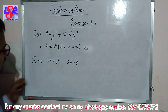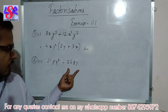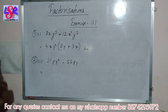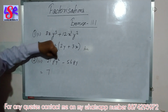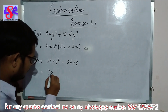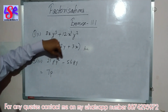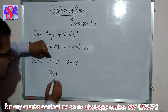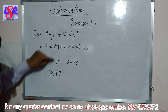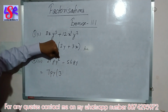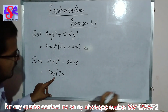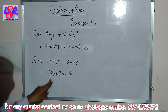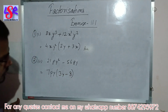Now question number 2, second part: 21py² - 56py. We will see which number can be taken as common from these two. 21 and 56 both come in the table of 7. Then we are having 1p here and 1p here, so we can take 1p common. Then we are having 2y here and 1y here, so we can take 1y as common. In the table of 7 we get 21 three times, so 3. Then 1p is taken, so p is not left. There were y², we have taken y, so we are left with 1y. Then minus sign. In the table of 7 we get 56 eight times, so here we get 8. Then 1p and 1y are already taken out. So this is your answer.